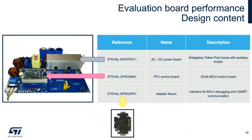ST has a brand-new evaluation kit for the totem pole topology with SCR-controlled startup, made of three different evaluation boards. The STEVAL-DPSTPFC1 is the main power train with silicon carbide MOSFETs and high-voltage SCRs. It's controlled by the DSP334M1, featuring the latest STM32 processing with embedded control algorithm. There's also a handy adapter board for debugging and communication, the DPSADP01. Together as a kit, it's capable of up to 3.6 kilowatts of output power.